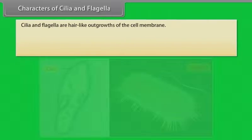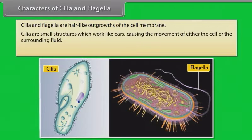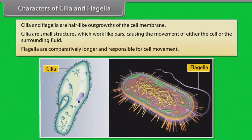Characters of cilia and flagella: Cilia and flagella are hair-like outgrowths of the cell membrane. Cilia are small structures which work like oars, causing the movement of either the cell or the surrounding fluid. Flagella are comparatively longer and responsible for cell movement.